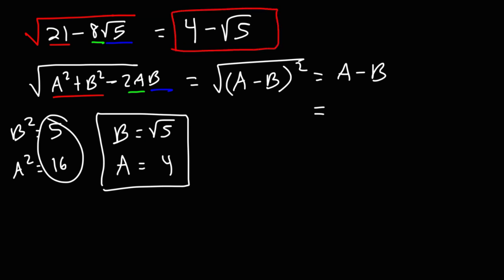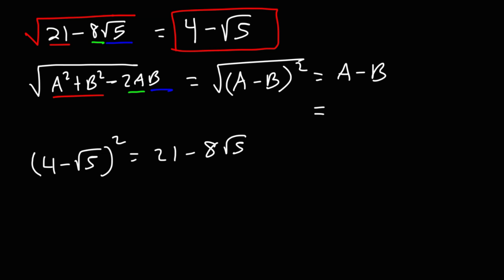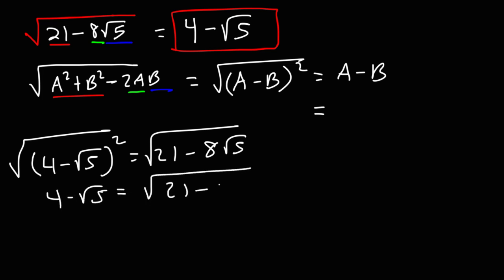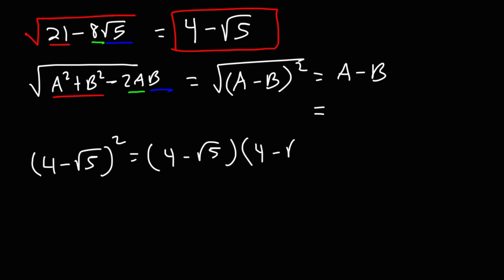Here's how we can check it. (4 minus the square root of 5) squared should equal what's inside of the radical: 21 minus 8 square root 5. Because if you take the square root of both sides, then 4 minus the square root of 5 should equal our original expression. So we're going to FOIL this expression — multiply (4 minus the square root of 5) by itself.